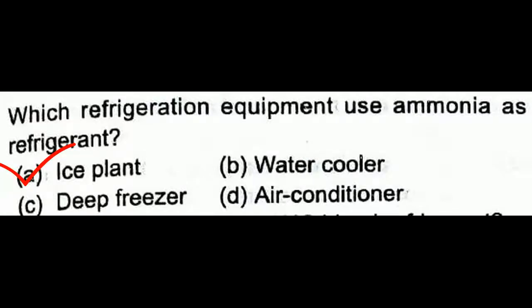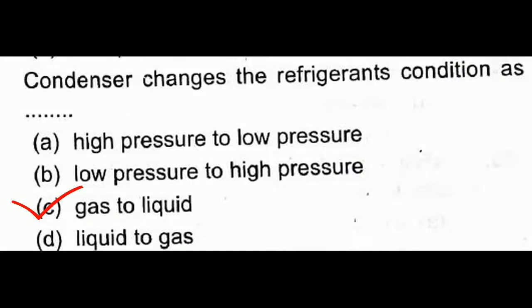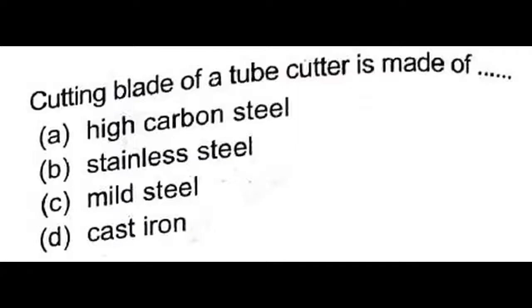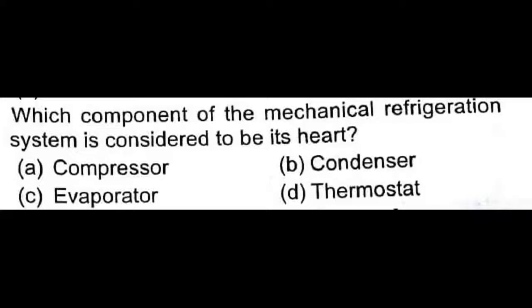Don't be confused — it is always ice plant that uses ammonia. Next: the condenser changes the refrigerant condition. The condenser changes the refrigerant condition from gas to liquid. The cutting blade of a tube cutter is made of high carbon steel — not stainless steel or mild steel. Option A is correct.